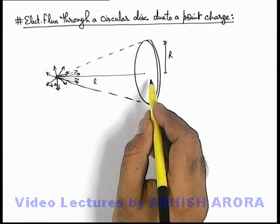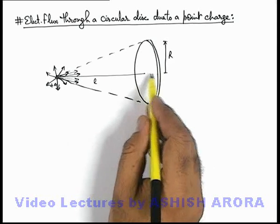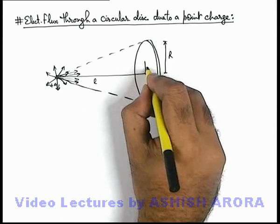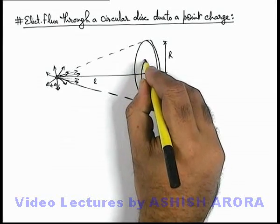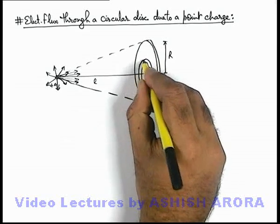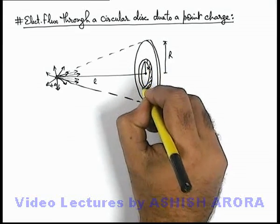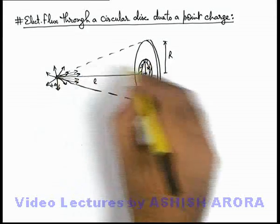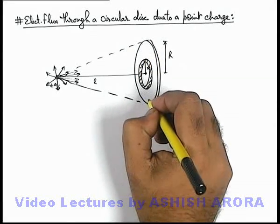To calculate the electric flux through the disc, we consider a small elemental ring of radius x and width dx, because electric field due to the charge at various points of the disc is non-uniform.